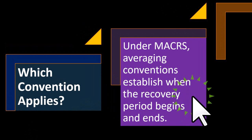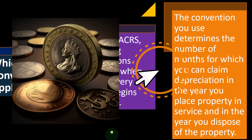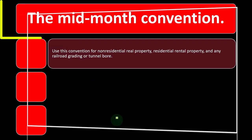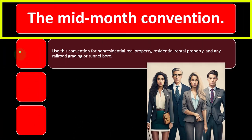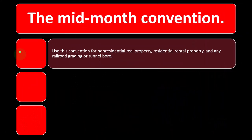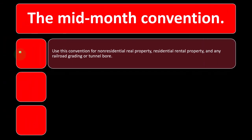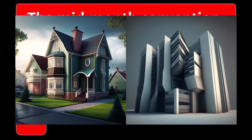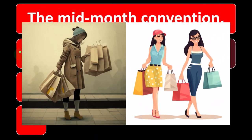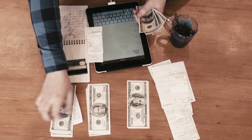Under MACRS, average conventions establish when the recovery period begins and ends. The convention you use determines the number of months you can claim depreciation in the year you place property in service and in the year you dispose of it. The mid-month convention applies to non-residential real property, residential rental property, and any railroad grading or tunnel bore. Under this convention, you treat all property placed in service or disposed of during a month as placed in service or disposed of at the midpoint of that month — so a half month of depreciation is allowed for the month the property is placed in service or disposed of.